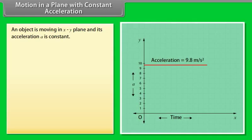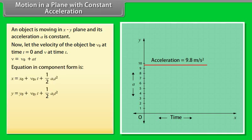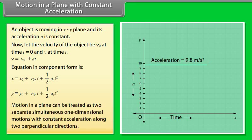Motion in a plane with constant acceleration: an object is moving in the xy plane and its acceleration a⃗ is constant. Let the velocity of the object be v₀ at time t = 0, and v at time t. Then v⃗ = v⃗₀ + a⃗t. We conclude that motion in a plane can be treated as two separate simultaneous one-dimensional motions with constant acceleration along two perpendicular directions. These results are also valid for three-dimensional motion.